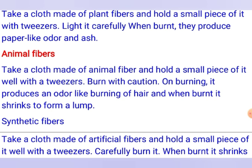To identify animal fibers, take a woolen cloth or any cloth made of animal fiber — say a silk cloth. Take a small piece with tweezers and burn it cautiously. When you burn it, you will notice a smell like burning hair, and the burnt fiber shrinks to form a lump. This is because wool is essentially hair obtained from sheep, goats, and other animals, so it produces the same smell as burning hair.